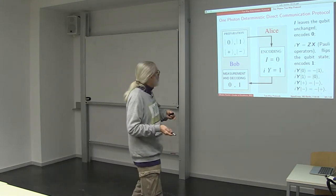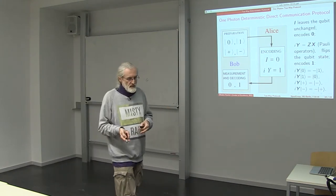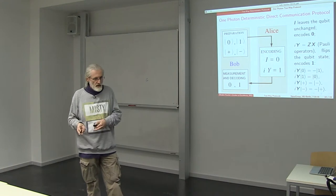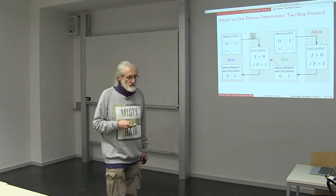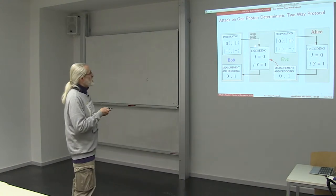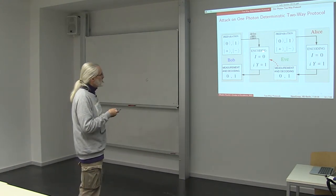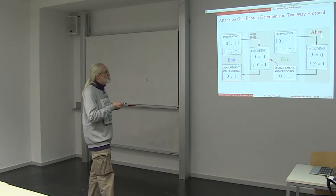Bob would receive a flipped state and would know that Alice sent message 1. So Alice either flips the state or doesn't, and in that way she sends message 1 or 0. However, in the same way as with ping-pong protocol, Eve can delay Bob's photon and send her photon to Alice.